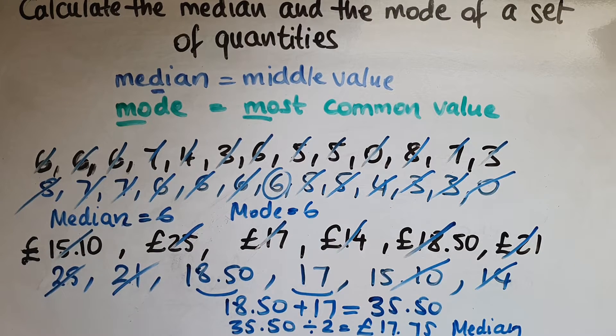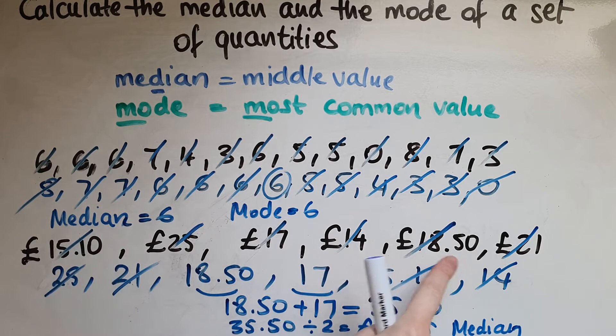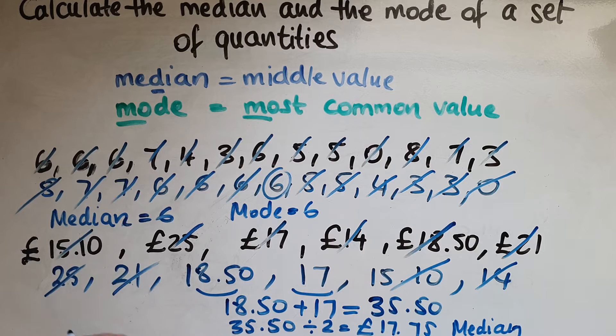Now, looking at this, is there any value that repeats itself? No, all of these are unique. They don't repeat themselves. So in this case, we haven't got a mode. So no mode for this set of values.